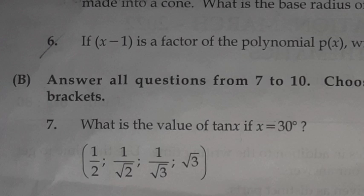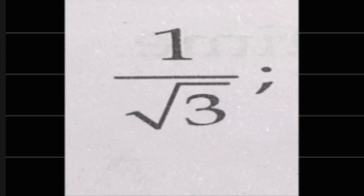Question 7: What is the value of tan if x is equal to 30 degrees? Answer: 1 by root 3.